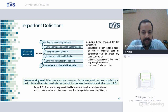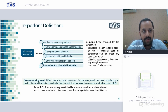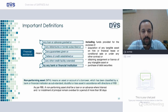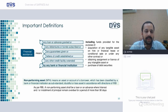Non-Performing Asset means an asset or account of a borrower which has been classified by a bank or financial institution as a substandard, doubtful, or loss asset in accordance with directions of RBI. As per RBI, any asset or any loan or advance where interest and/or installment of principal remains overdue for a period of more than 90 days is categorized as a non-performing asset.